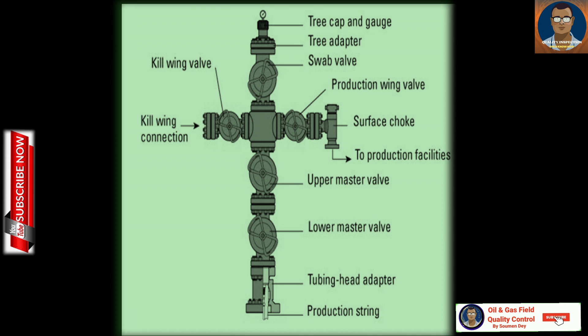First: Kill Wing Valve. This valve injects fluid like drilling mud or brine into the well to control the pressure. It is often used in well interventions and maintenance activities to kill the well — meaning to control the pressure and hold the flow of fluid. You can see the kill wing connection on the schematic drawing of the wellhead.